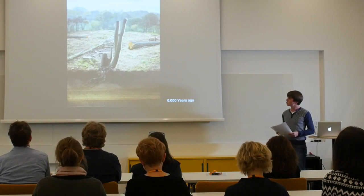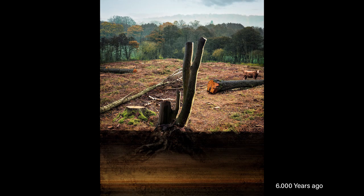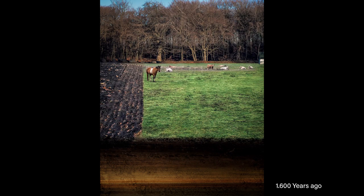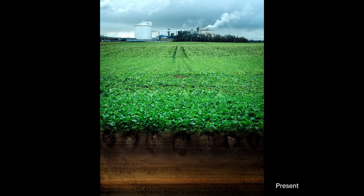6,000 years ago, trees are being cut down. It makes hunting easier and people can get opportunities to hold cattle, and also farming might start — ideas that actually originated in the Middle East. 1,600 years ago, small-scale farming is mainly happening here, but there is still forest. And of course, nowadays, farming has taken up industrial proportions.